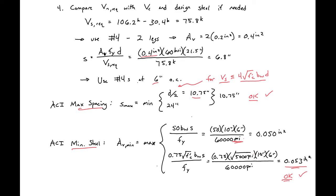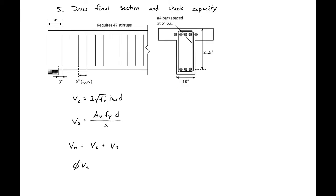So we have our final design: number 4 bars spaced at 6 inches on center. We need to draw our final section and lay out where our stirrups are going. The first bar will be placed 3 inches from the edge of the support — less than or equal to s/2 — putting our first bar at 3 inches from the end, then 6 inches spacing for the rest of the beam, with two legs of steel.